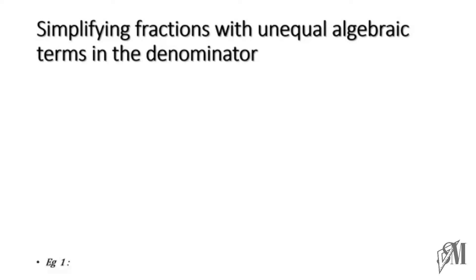Look at this: 5 over 3a plus 1 over 4a. The denominators of these two fractions are different — 3a in one and 4a in another. In basics of fractions you have learnt you can add or subtract fractions only if the denominators are similar. So to equate the denominators we have to think of a number which can be divided by both 3a and 4a — in other words, the LCM of 3a and 4a, which is 12a.